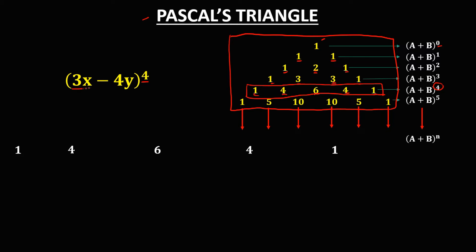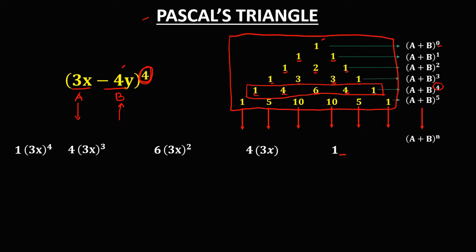In the given, 3x is A and negative 4y is B. For A, the exponent is going down: 3x to the power 4, 3x to the power 3, 3x to the power 2, and 3x to the power 1. For B, the exponent is going up, so negative 4y starts at the last term: negative 4y to the power 1, negative 4y to the power 2, negative 4y to the power 3, and negative 4y to the power 4.